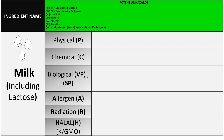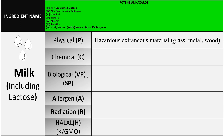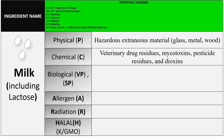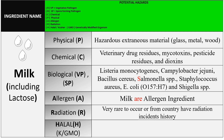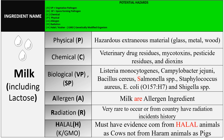We'll start with milk including lactose. The physical hazard includes hazardous extraneous materials such as glass, metal, or wood. The chemical hazard may be due to veterinary drug residues, mycotoxins, pesticide residues, and dioxins. The biological hazard includes vegetative pathogens and spore-forming organisms: Listeria, Campylobacter, Bacillus, Salmonella, E. coli, and Staphylococcus. Milk is an allergen ingredient. Radiation is very rare. For halal, there must be evidence that the milk comes from halal animals such as cows, not haram animals such as pigs.